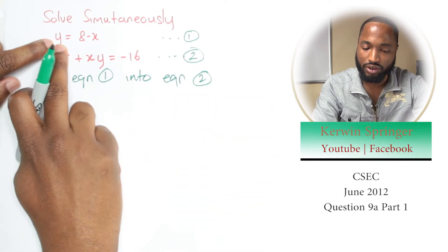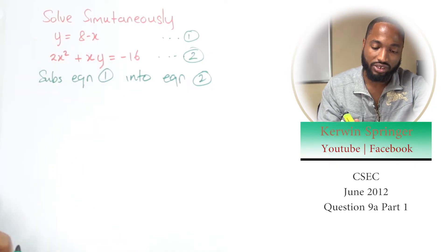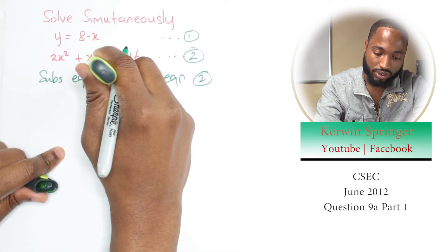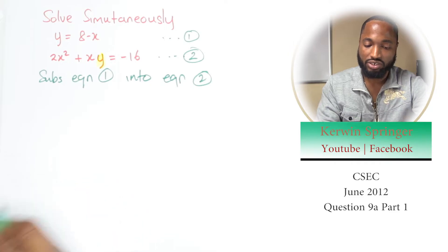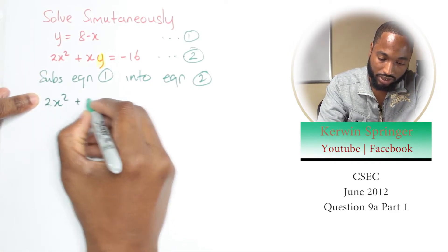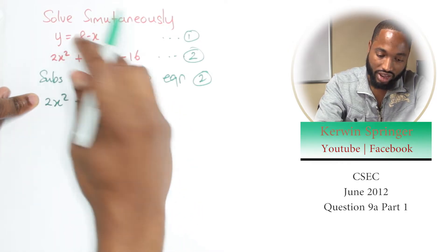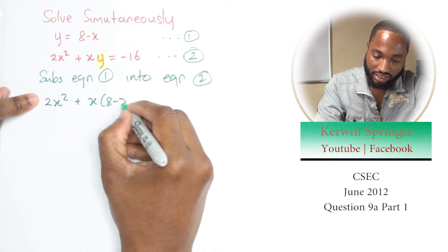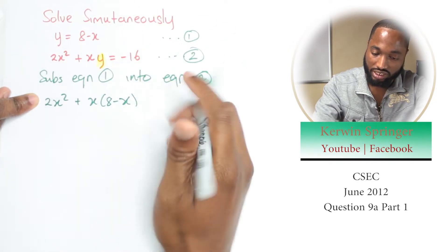Equation 1, y is the subject of the formula. I see y in equation 2, so I'm going to put 8 minus x. So it's going to look like this: write back equation 2, 2x² plus x. Don't write y, instead write 8 minus x because I substituted this equation into that equation.